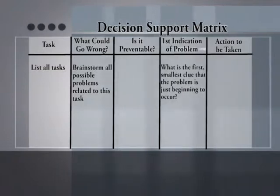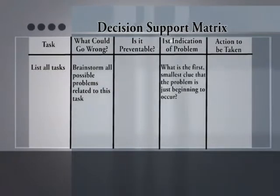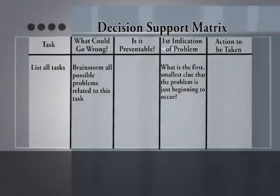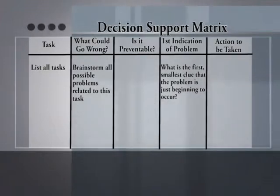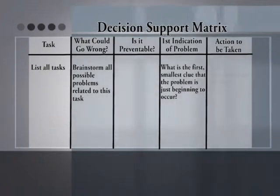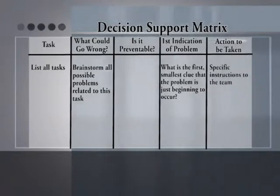Once we've identified all the possible problems, we want to find the first indication of the problem — the first, smallest clue of the very beginnings of that problem. So when I see this indicator, it tells me this problem is just starting to happen, and here's what I'm going to do about it. We then give specific instructions to the team on what they need to do.